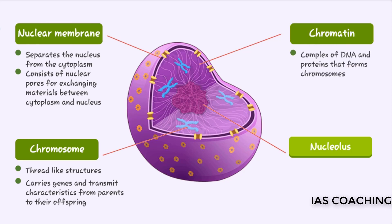A complex of DNA and proteins forms chromosomes. There is a smaller spherical body inside the nucleus called the nucleolus, which contains proteins and nucleic acids.